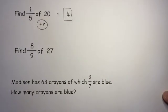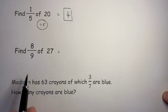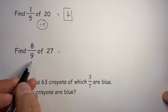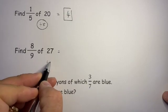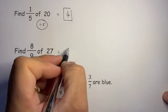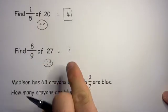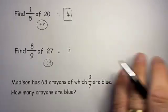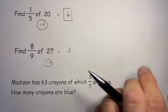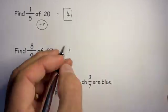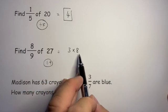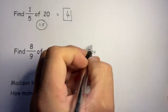I do the same maths for 8/9 of 27: I divide by 9, and 9 goes into 27 three times — that is what 1/9 is. So I could have 3, 3, 3... written out nine times. Now I want 8 of them, because I want 8/9ths, so I want 8 threes. The answer is 24.